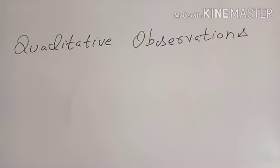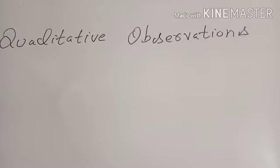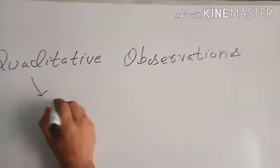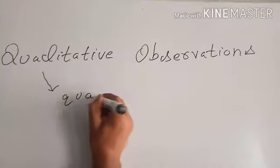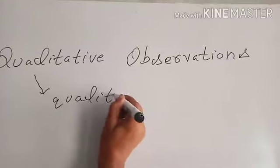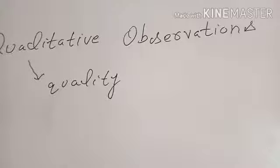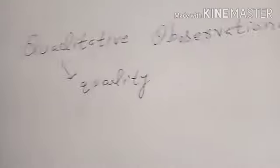What are qualitative observations? Qualitative observations describe the quality of the thing which has been observed. For example, if we observe the boiling point of water and freezing point of water.